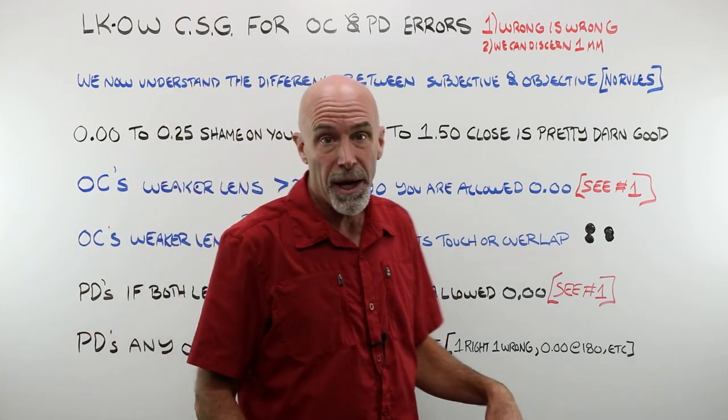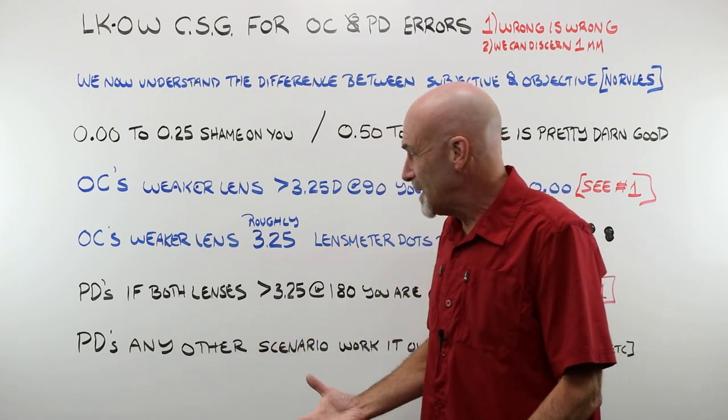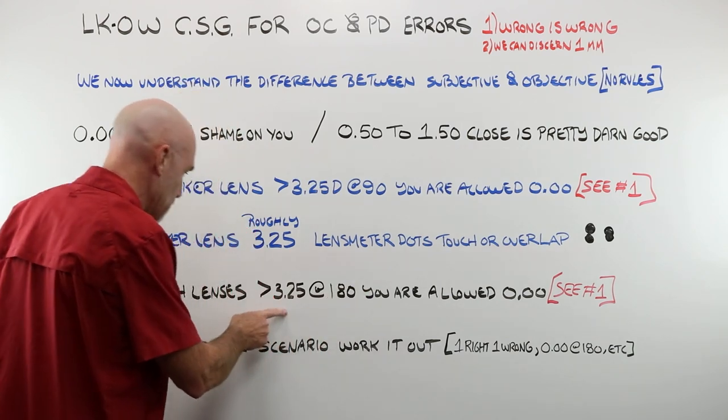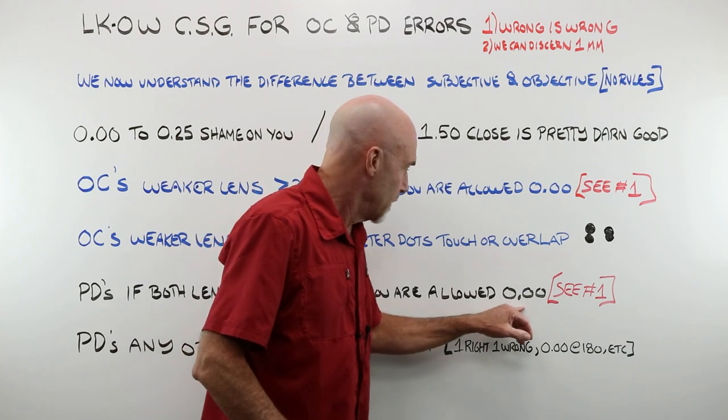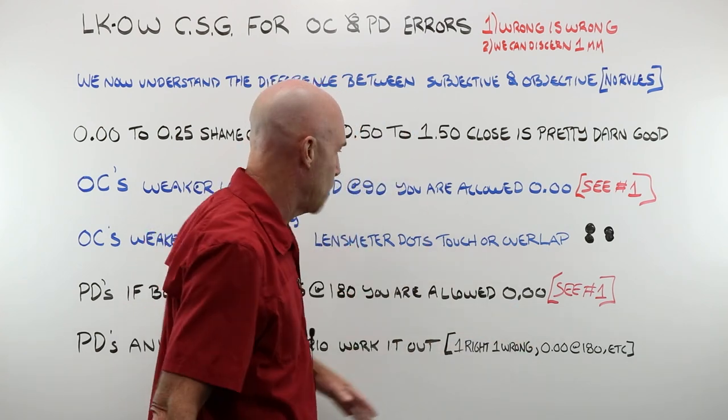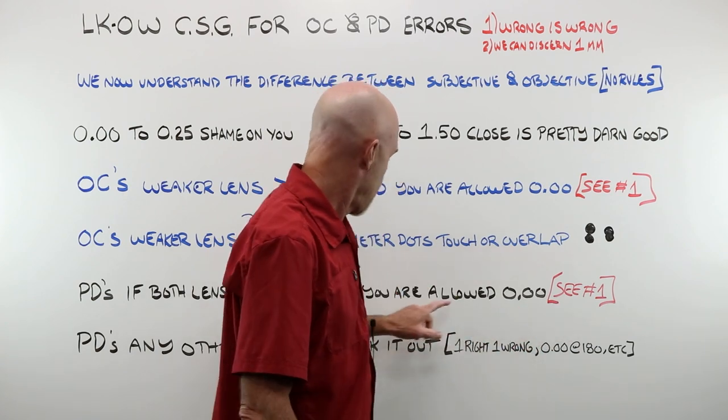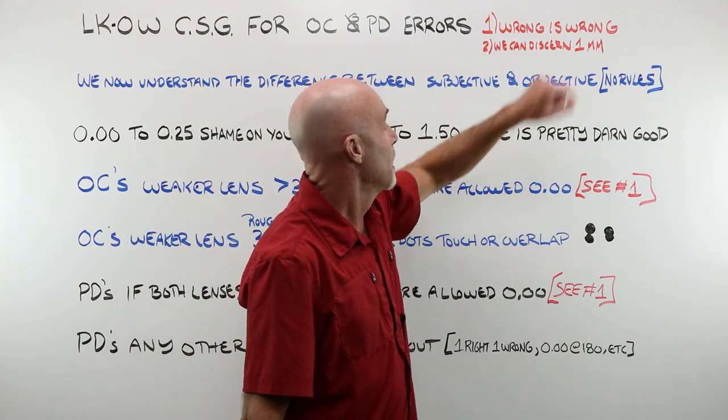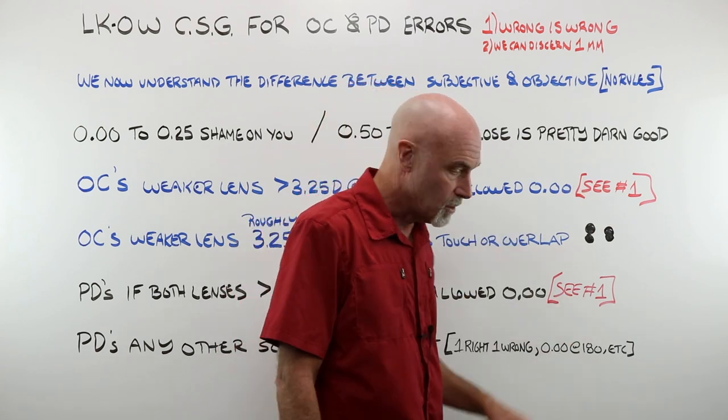I think we kind of have one rule for PDs. If both lenses at 180 are greater than 3.25, 3.50, you are allowed zero. Again, if you just work it out as a perfect rule of thumb, if you have greater than 3.50, your PD needs to be spot on. If it's not, the job was probably made wrong. Layout error. Send it back and have it made right.